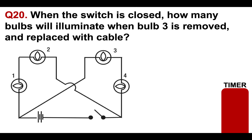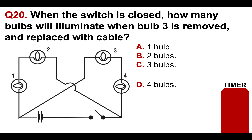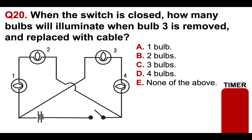Question 20: when the switch is closed, how many bulbs will illuminate when bulb three is removed and replaced with cable or electrical wire? A: one bulb, B: two bulbs, C: three bulbs, D: four bulbs, or E: none of the above. Please put your answer to question 20 in the comments section below.